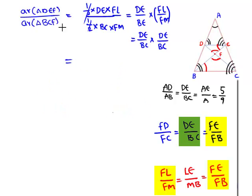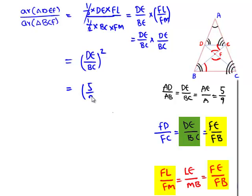The ratio of the area of triangle DEF to the area of triangle BCF equals DE squared divided by BC squared, which equals DE divided by BC, whole squared. We conclude that when two triangles are similar, the ratio of their areas equals the ratio of the square of their corresponding sides. Since DE to BC equals 5 to 9, we get 5/9 squared, which equals 25 upon 81.